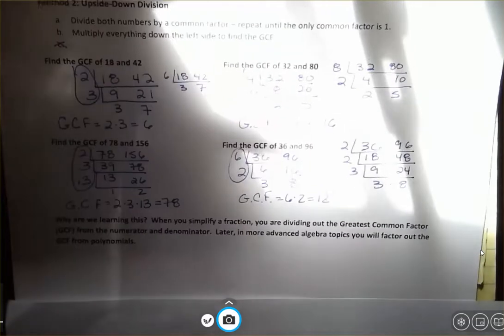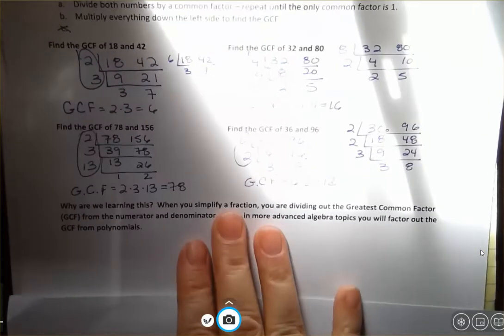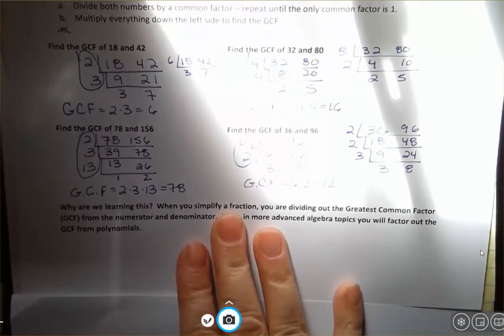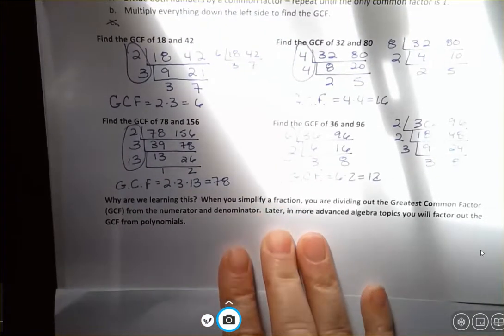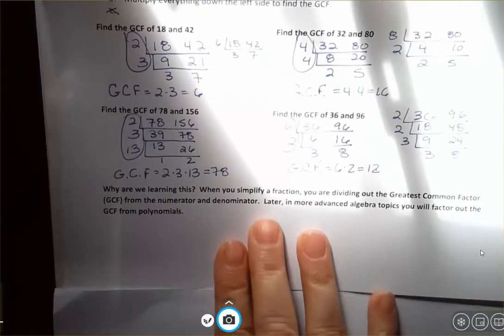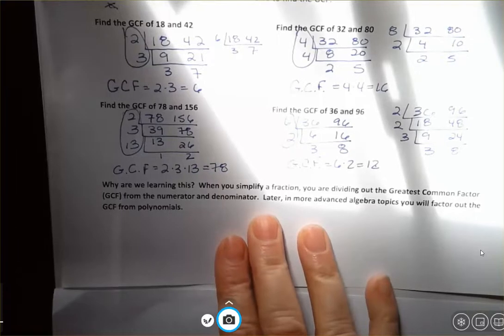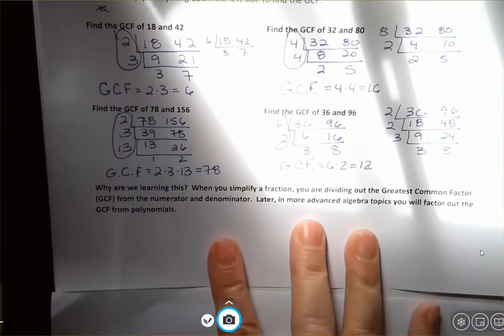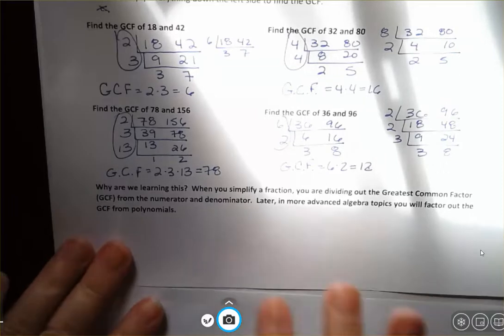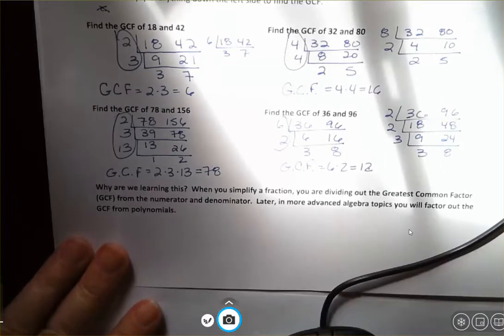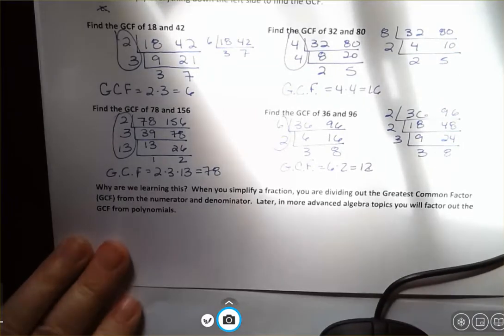And you might be asking, why are we learning this? When you simplify a fraction, you are dividing out the greatest common factor from the numerator and the denominator. So you're going to use this when you simplify fractions. And later in more advanced algebra topics, you'll factor out the GCF from polynomials. Sorry about the sunlight on this video. I'm going to call it good though. Have a fantastic day.